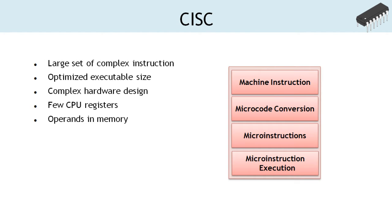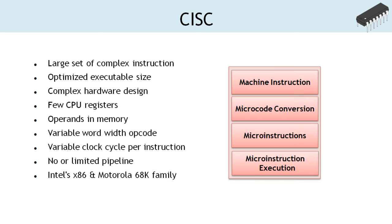The CISC architecture implements an instruction set that contains a large number of complex instructions. A CISC instruction can be split into several simple instructions called micro-instructions executed by the microprocessor. The CISC architecture optimizes the size of the executable image by emitting fewer instructions for a program. A CISC machine has a few CPU registers and the instructions process operands stored in the computer's memory. The instructions of a CISC machine are encoded using variable word width, meaning there is no uniformity in the number of bits used to encode different instructions.